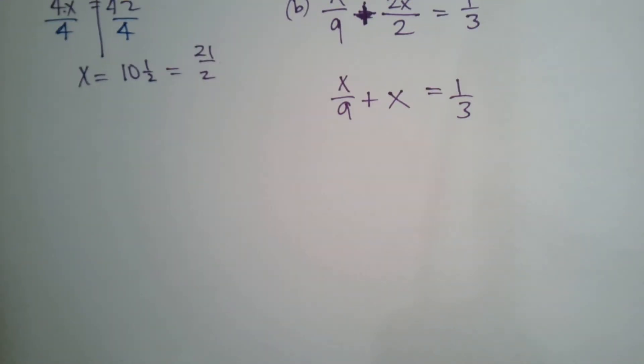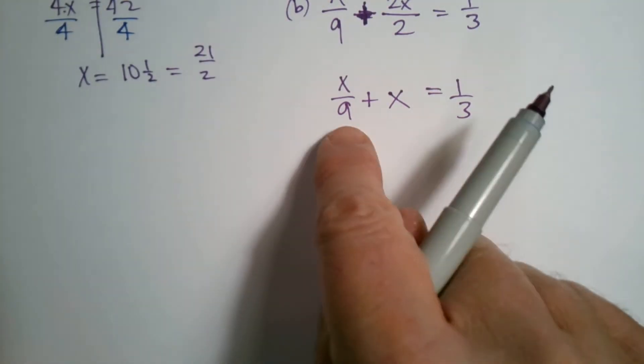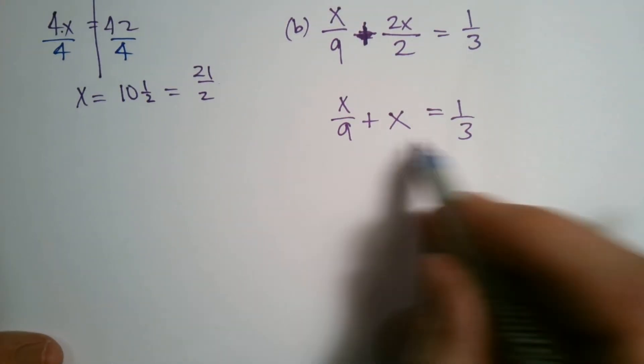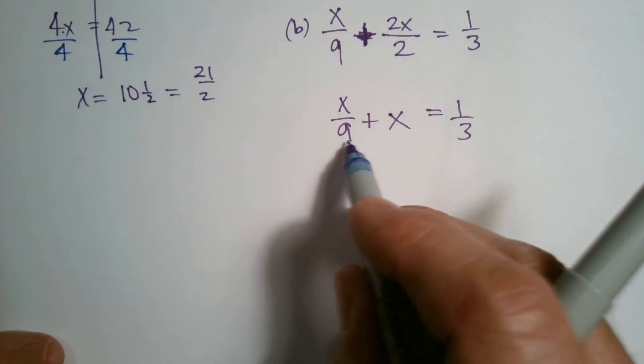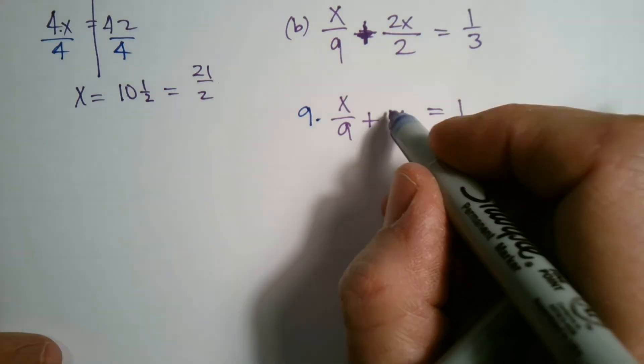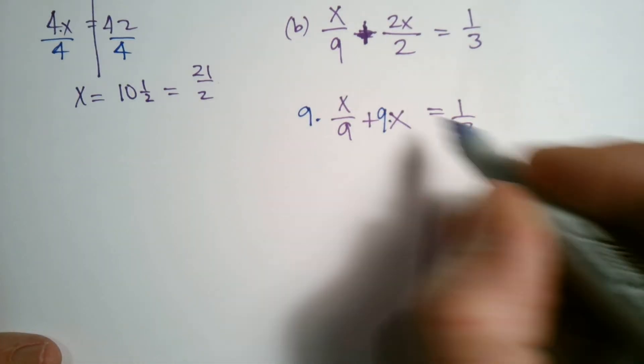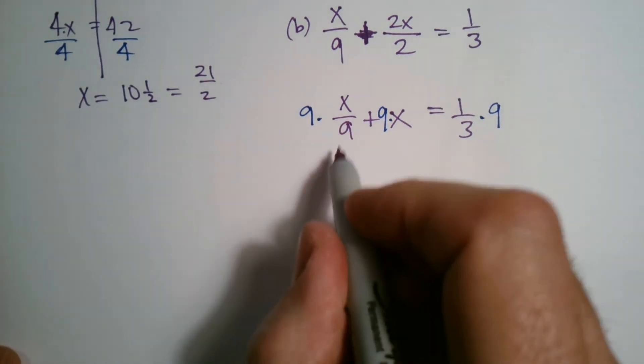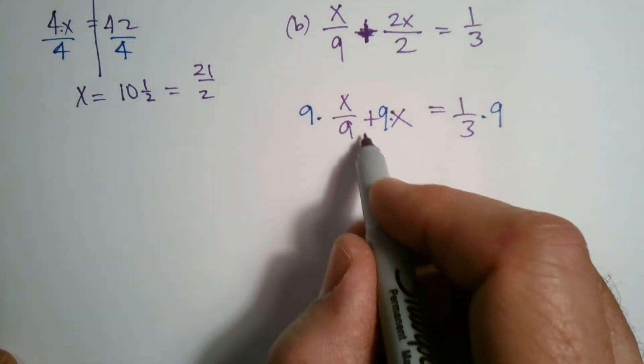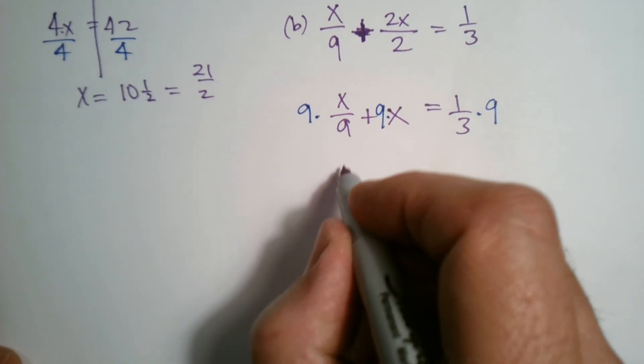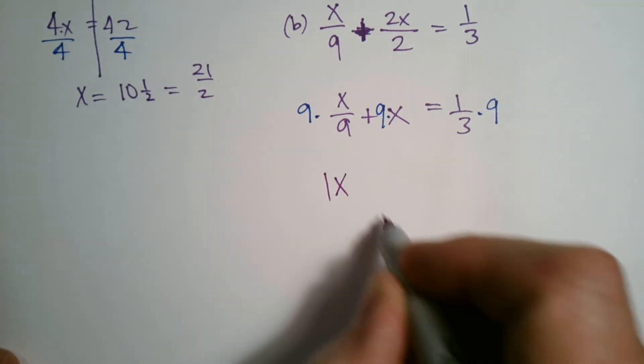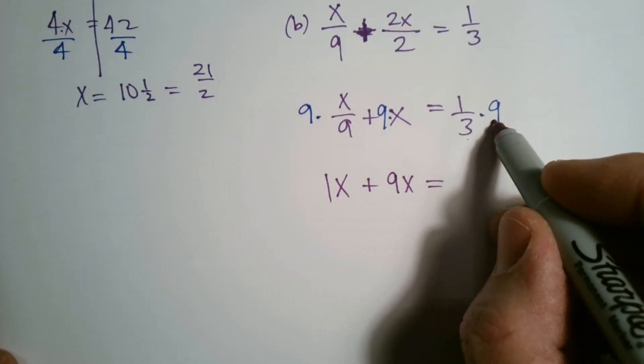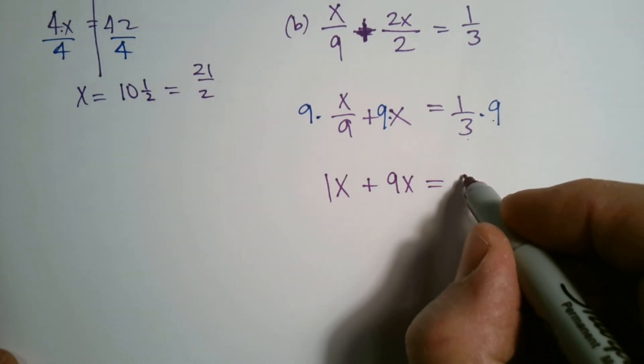I still want to use fraction busters though because I still have this x divided by 9 and that 1 third. But it makes it nice because now my common denominator is 9. I didn't have to worry about that 2. My common denominator is 9. So I'm multiplying everything by 9. When I multiply x over 9 times 9, that inverse operation cancels those 9s out and you're left with x or 1x. I have plus 9x is equal to and then 1 third of 9 or 1 third times 9 is 3.